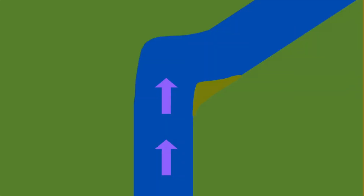Over time, this forms new land called point bars. As a result of both cut banks and point bars, the river's course is diverted. Once this process happens once, it alters the direction of water, causing the same process to repeat itself, which is why there's rarely one curve on a river.